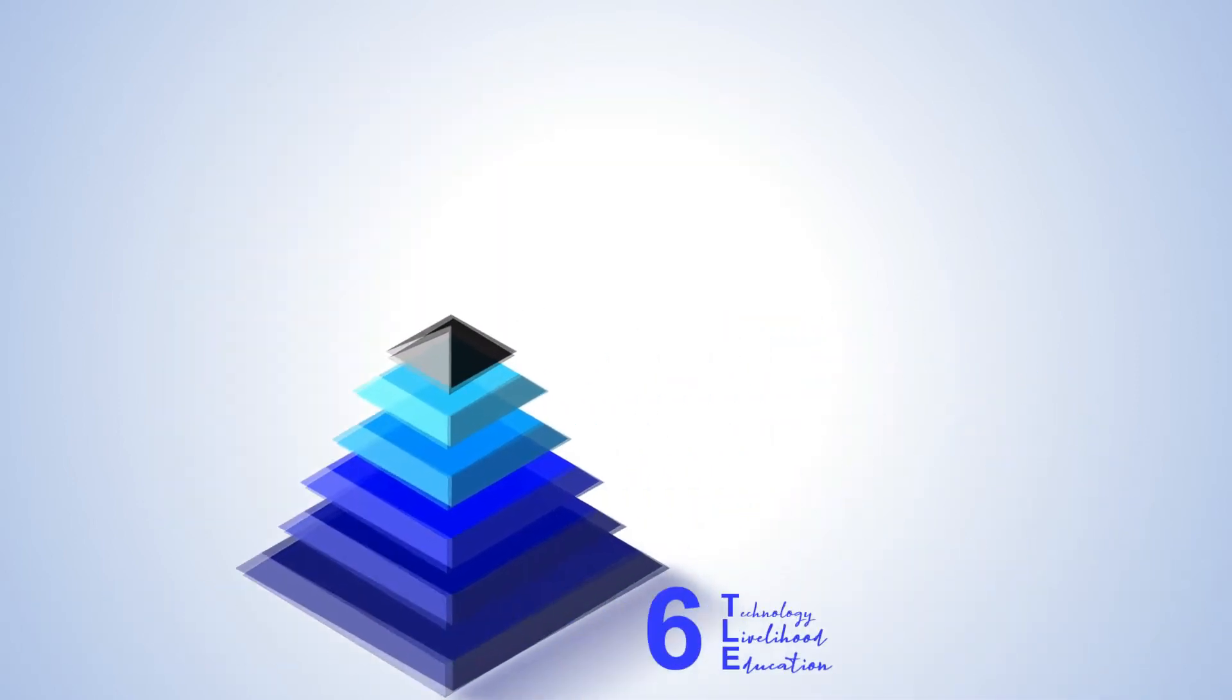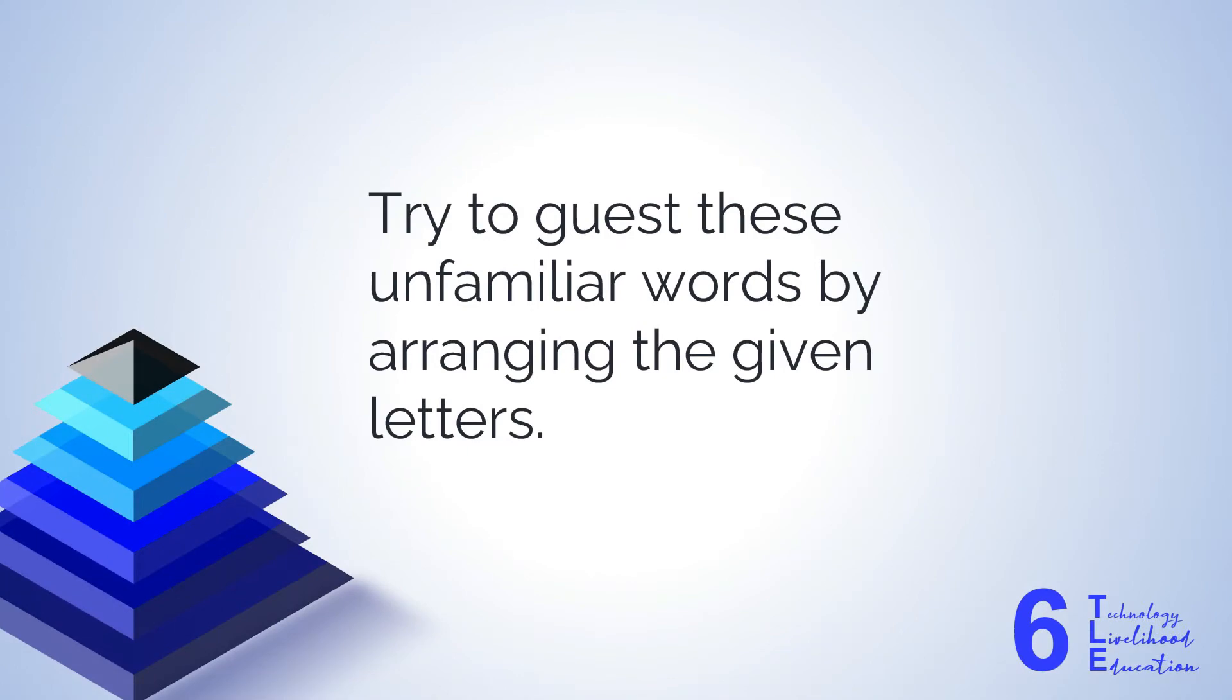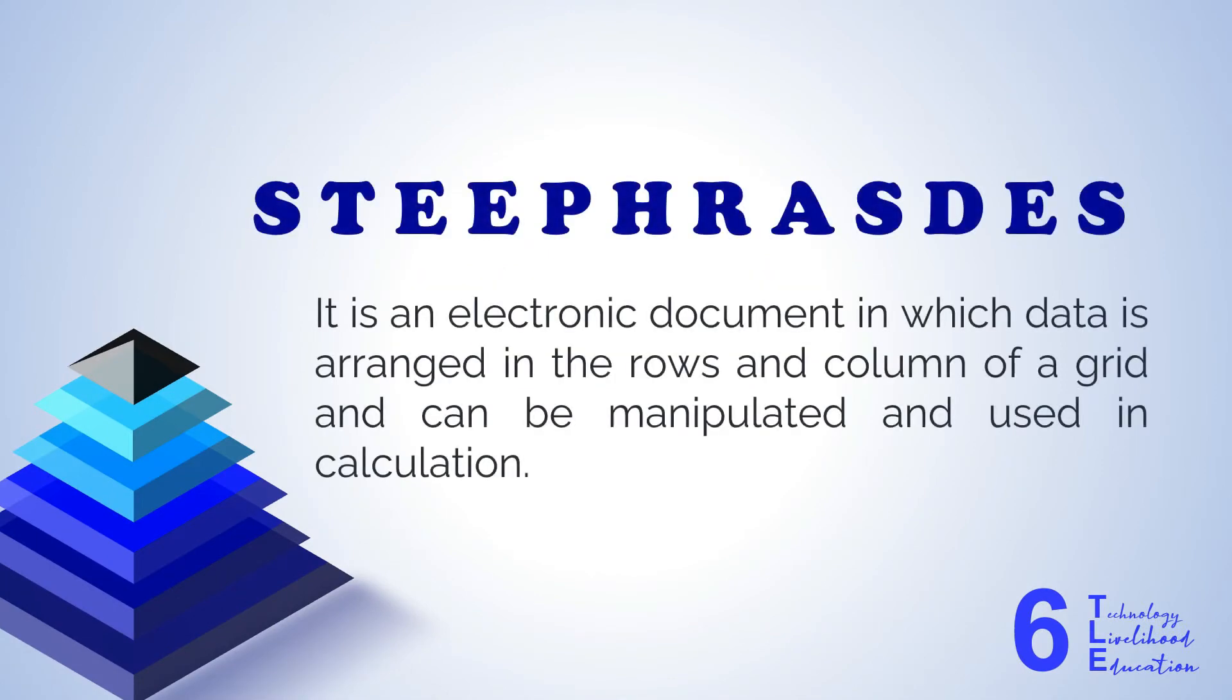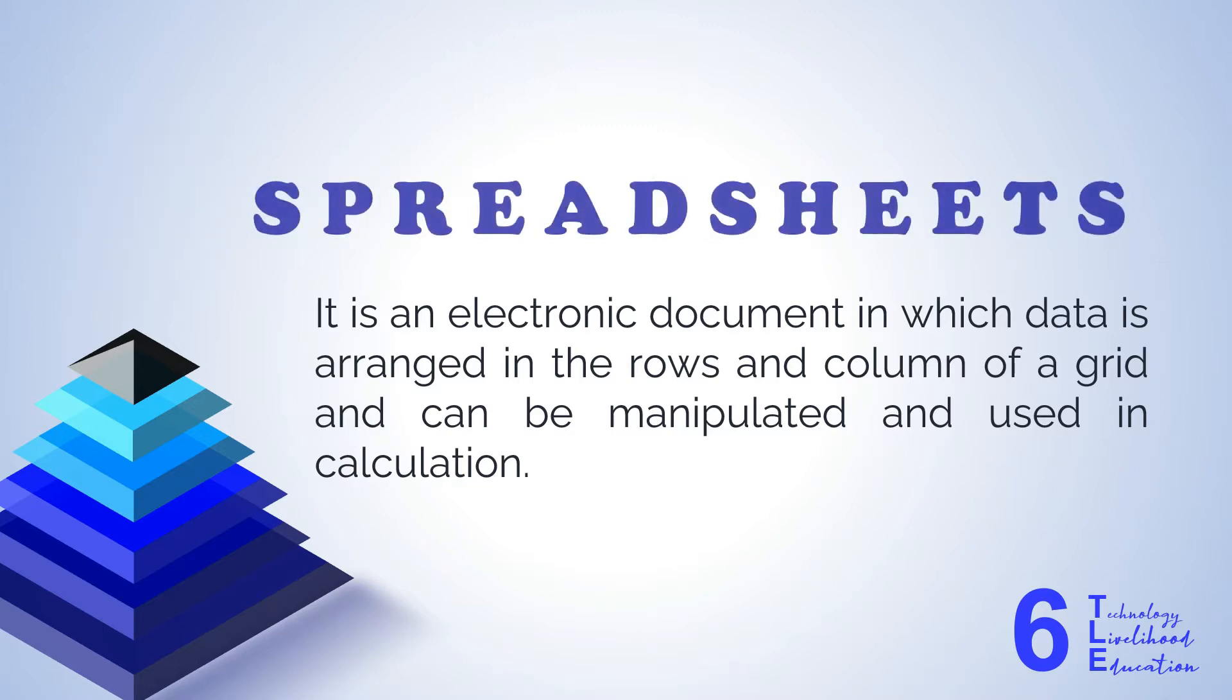Try to guess these unfamiliar words by arranging the jumbled letters. First word: S-T-E-E-P-H-R-A-S-D-E. It is an electronic document in which data is arranged in the rows and column of a grid and can be manipulated and used in calculation. And the correct answer is spreadsheets.